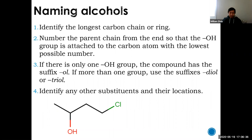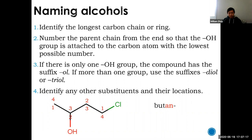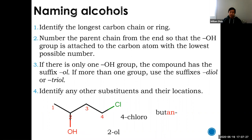In the example, there are four carbons in the chain — butane. Counting from the left, the hydroxyl is on carbon two; from the right it would be carbon three. You count from the left to give hydroxyl the smallest number, making this a 2-ol, not a 3-ol. There's also a chloro at carbon four. The full name is 4-chlorobutan-2-ol.